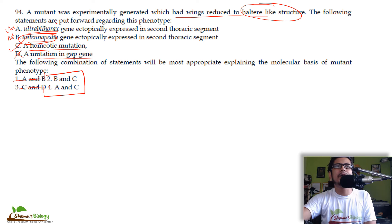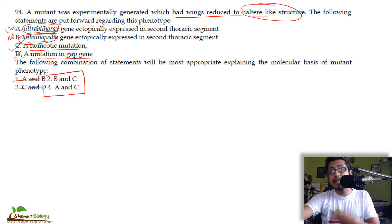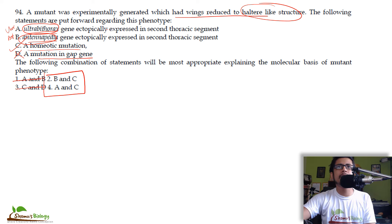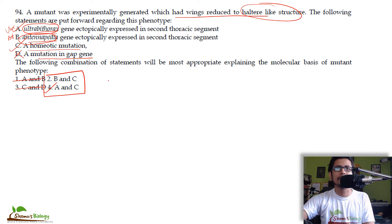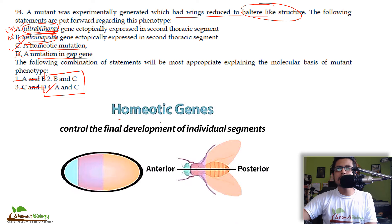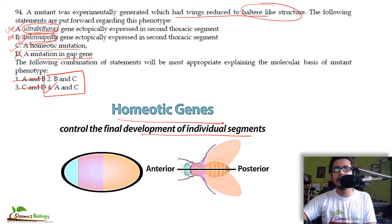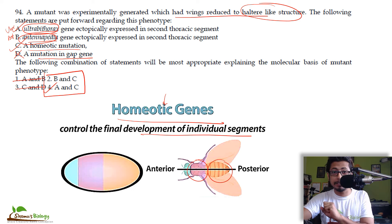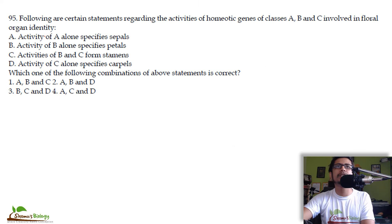Without knowing anything beyond the basics of homeotic and gap genes, we conclude that statement C is correct and option 1 is excluded. Now we are 50-50 between option 2 and option 4. We can assume Antennapedia is linked with antenna formation, which must be expressed in the head region. Ultrabithorax is not linked with antenna, so it can be linked with wings. Using this logic, Ultrabithorax with statement C gives us option 4 as correct.